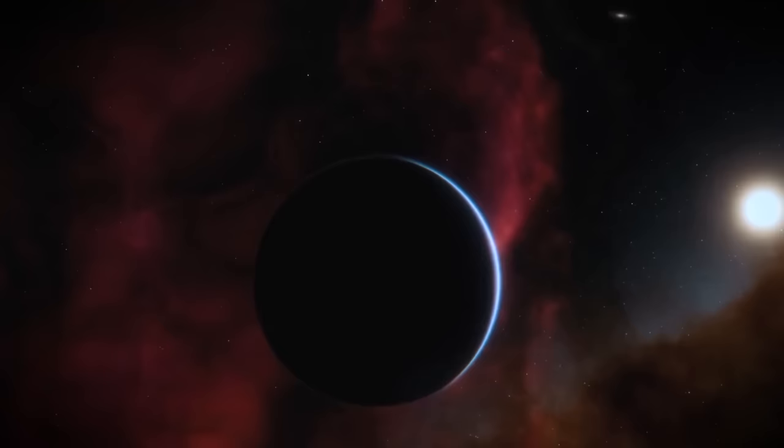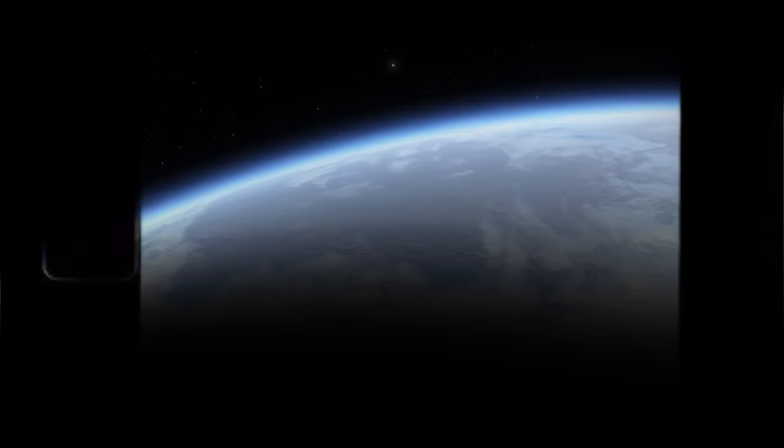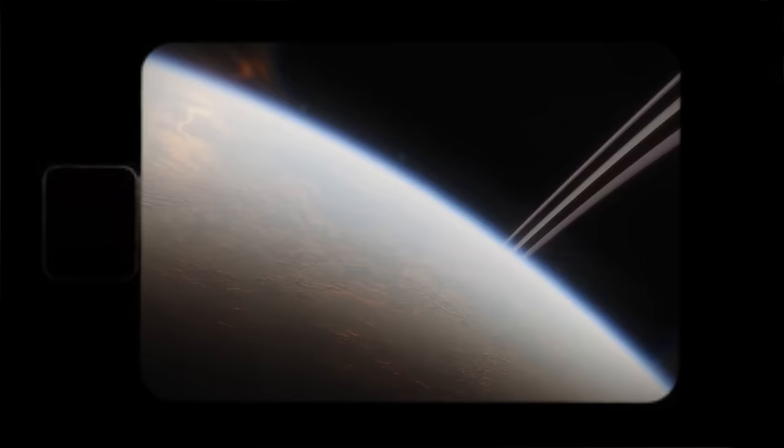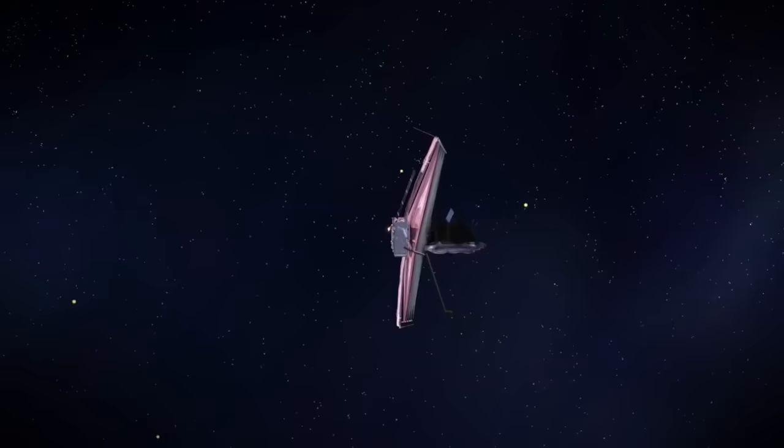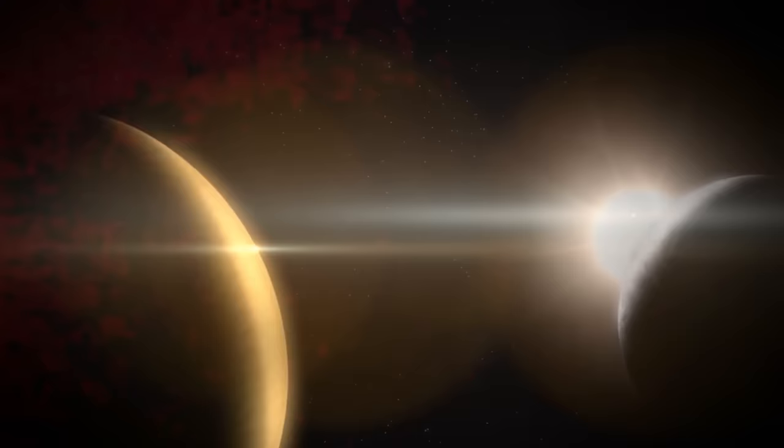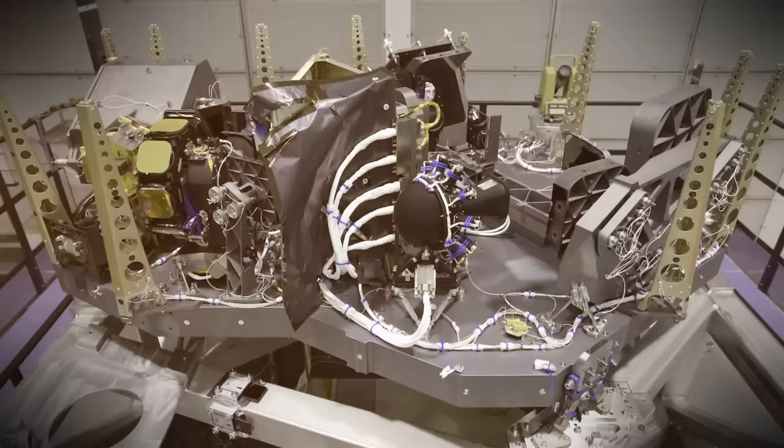Additionally, the JWST's unprecedented sensitivity and resolution are attributed to its colossal segmented primary mirror, spanning an impressive 6.5 meters in diameter. This enormous mirror collects and focuses light with unparalleled precision, enhancing the telescope's ability to capture clear and detailed images of distant objects. The mirror's segmented design allows for more straightforward transport and deployment in space, overcoming the constraints of traditional single-piece mirrors.